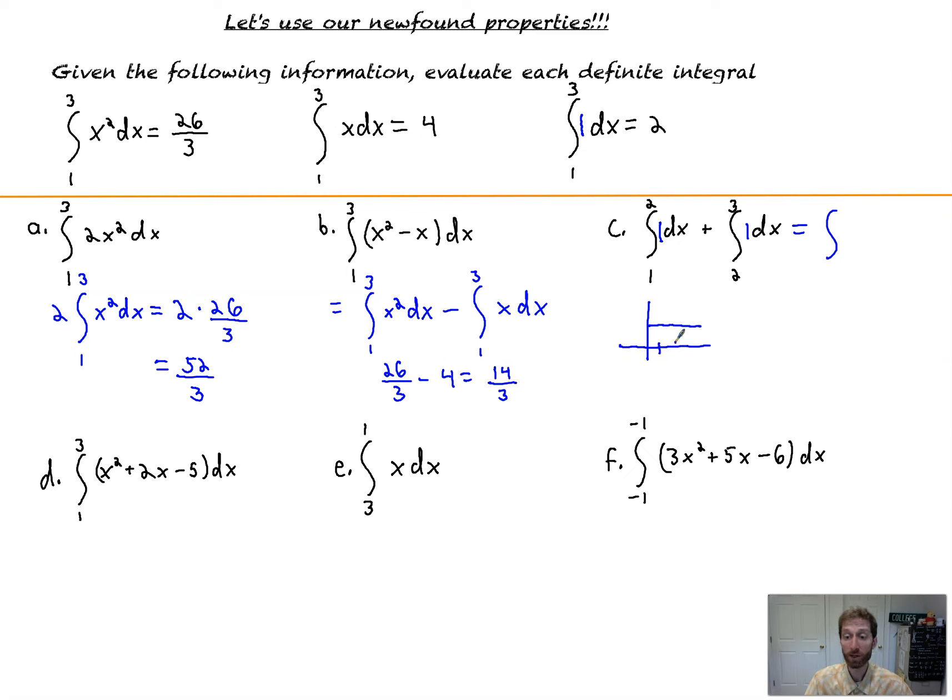And if we go from 1 to 2 and then 2 to 3, that's the same as just doing the whole exact area, right? So that'd be from 1 to 3 of 1 dx, and that's equal to 2. All right, we already have that. Nice.